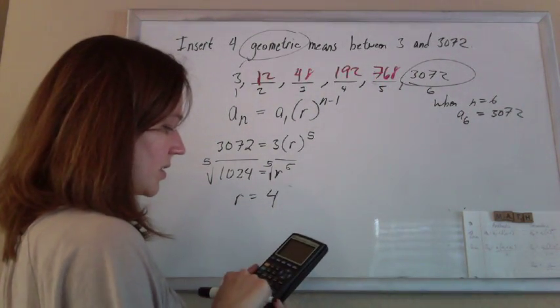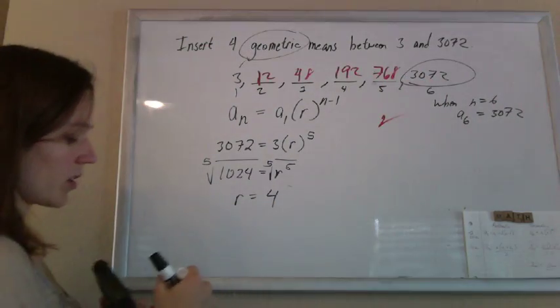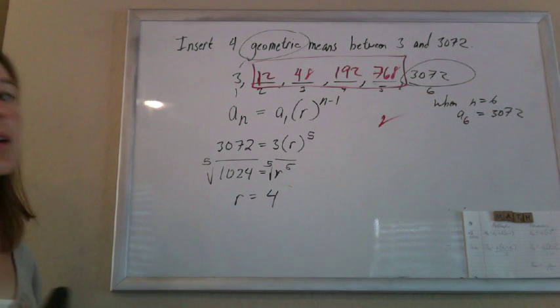and 768 times 4 is 3072. Heck yeah, it works. These are what you're looking for. Awesome.